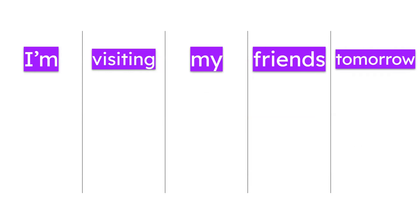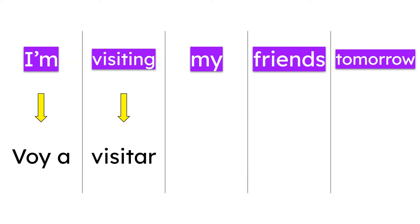Next: 'I'm visiting my friends tomorrow.' What structure do we need? That's right — we need the structure with the future, because we have tomorrow. The verb to visit is visitar in Spanish. So 'I'm visiting' is voy a visitar. Remember, the verb that follows voy a remains unconjugated. Voy a visitar.